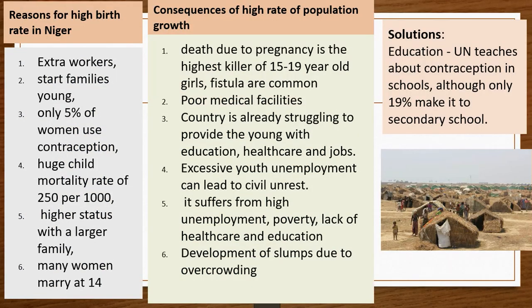For poor families, children are a source of wealth. Reasons for Niger's high birth rate include: the need for extra farm workers; early marriage, with many women marrying at age 12–14; only 5% of women use contraceptives, meaning little knowledge of family planning; high child mortality rates, so parents have more children to ensure some survive; and higher social status associated with having a larger family.